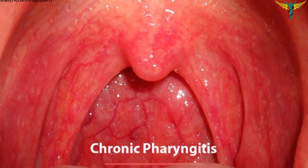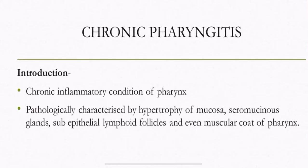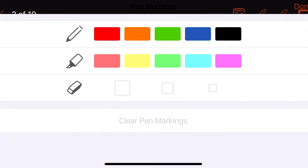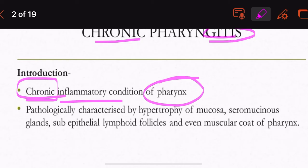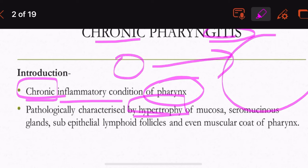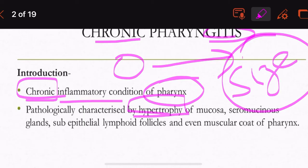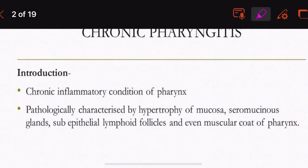In this video we are going to discuss chronic pharyngitis. Chronic pharyngitis is a chronic inflammatory condition of the pharynx — the suffix '-itis' itself means inflammation. Pathologically, it is characterized by hypertrophy, which is an increase in the size of the cell. We can see the hypertrophy of the mucosa here.